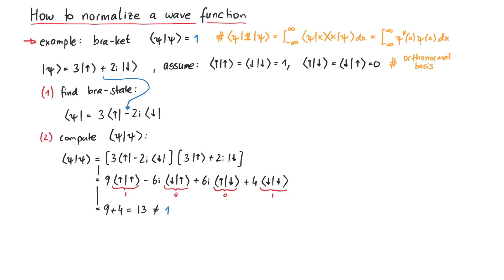In fact, if we write this as psi psi over 13 being equal to 1, you can see that if we divide the bra and ket by the square root of 13, then the new wave function psi tilde will be normalized. The final result is psi tilde is equal to 3 over the square root of 13 times up plus 2i over the square root of 13 times down.